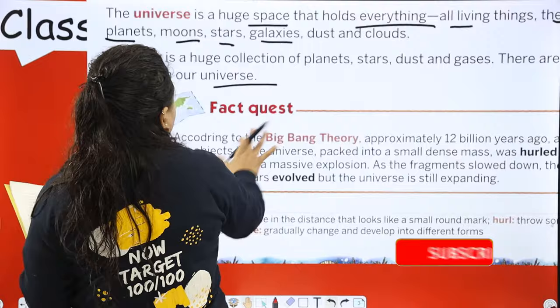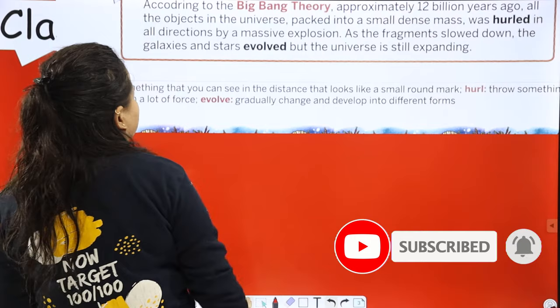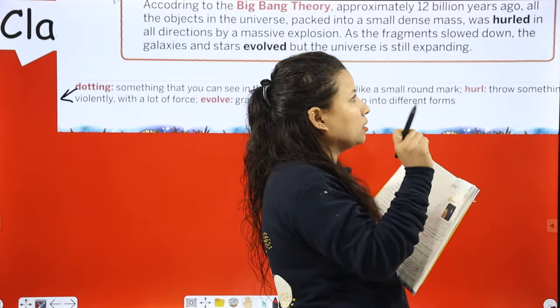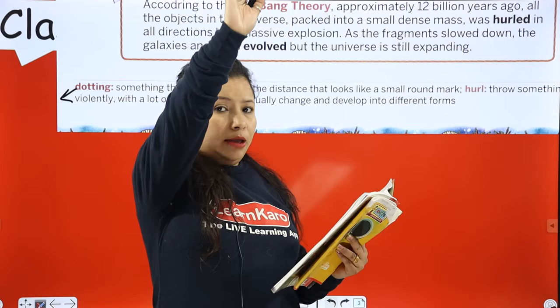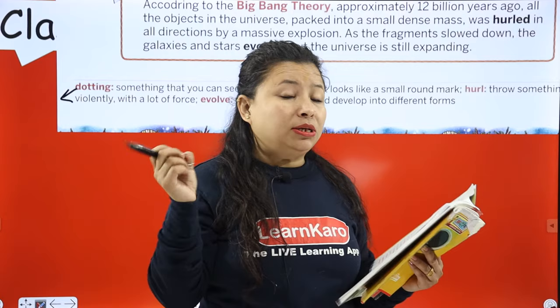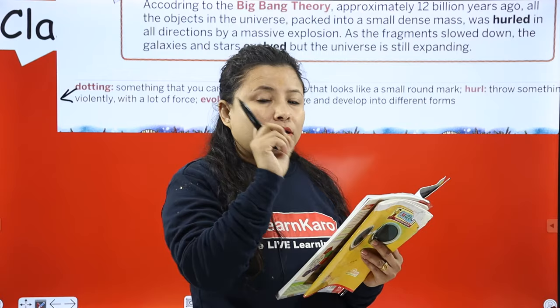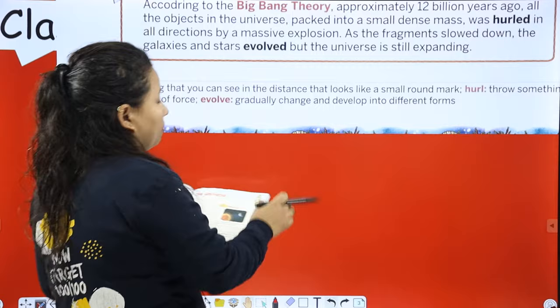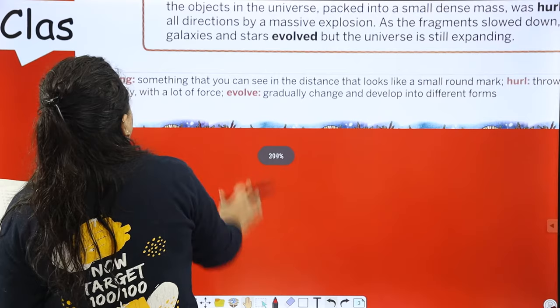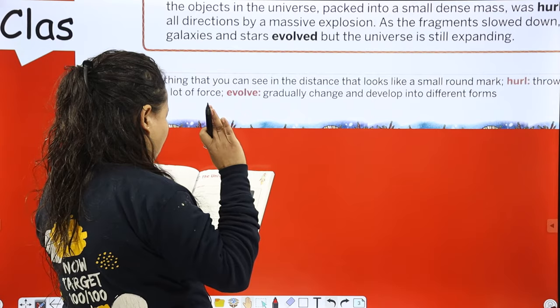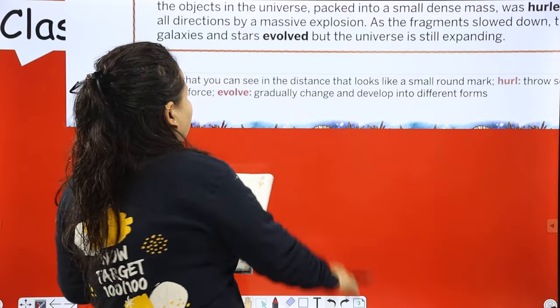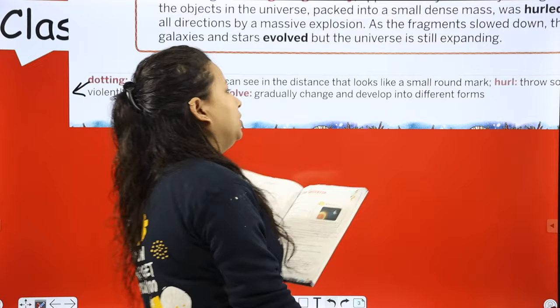Now, what is dotting? The twinkling stars dotting the night sky - something that you can see in the distance that looks like a small round mark. When you look at the sky at night, stars appear to us like dots - a small round mark. Hull means to throw something violently with a lot of force. Evolve means to gradually change and develop into different forms.